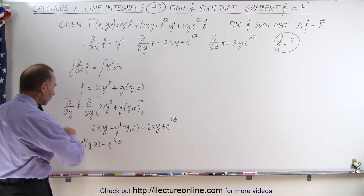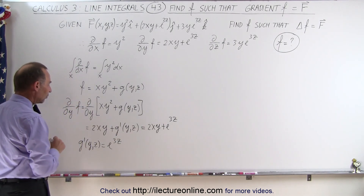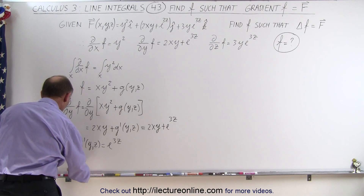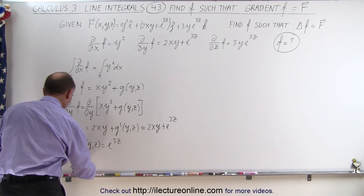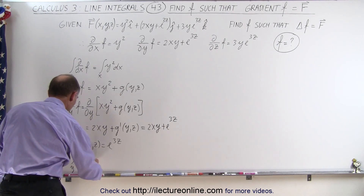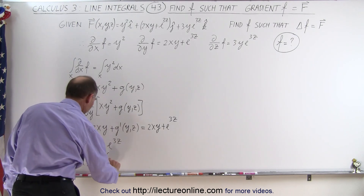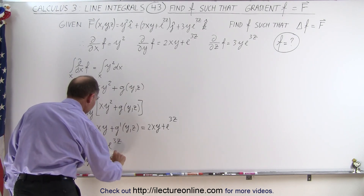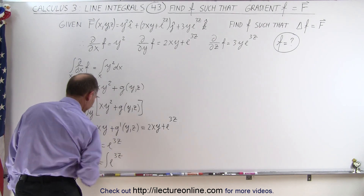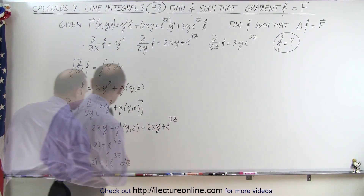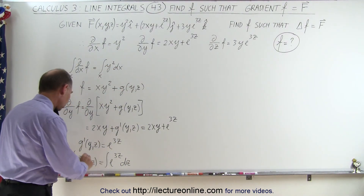Now if we take the integral of both sides with respect to Y — the integral of G prime of Y, Z with respect to Y — that is equal to the integral of E to the 3Z DZ.